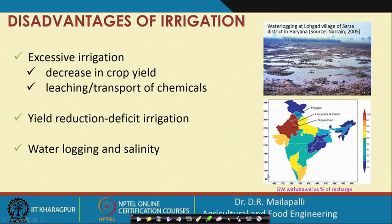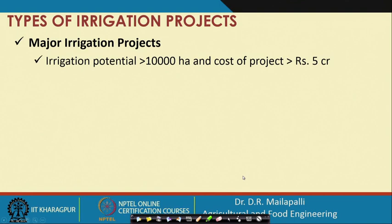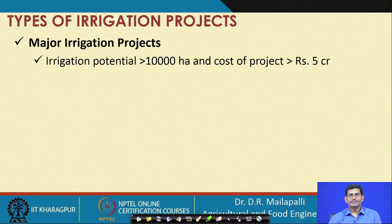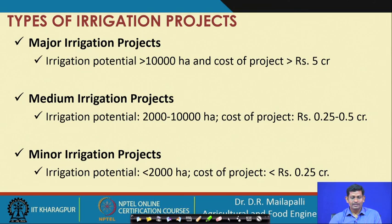Types of irrigation projects in India are classified into three major classes. Major irrigation projects have an irrigation potential greater than 10,000 hectares and a cost of more than 5 crores. Medium irrigation projects have a potential of 2,000 to 10,000 hectares and a cost of 25 to 50 lakhs. Minor irrigation projects have a potential less than 2,000 hectares and a cost less than 25 lakhs.